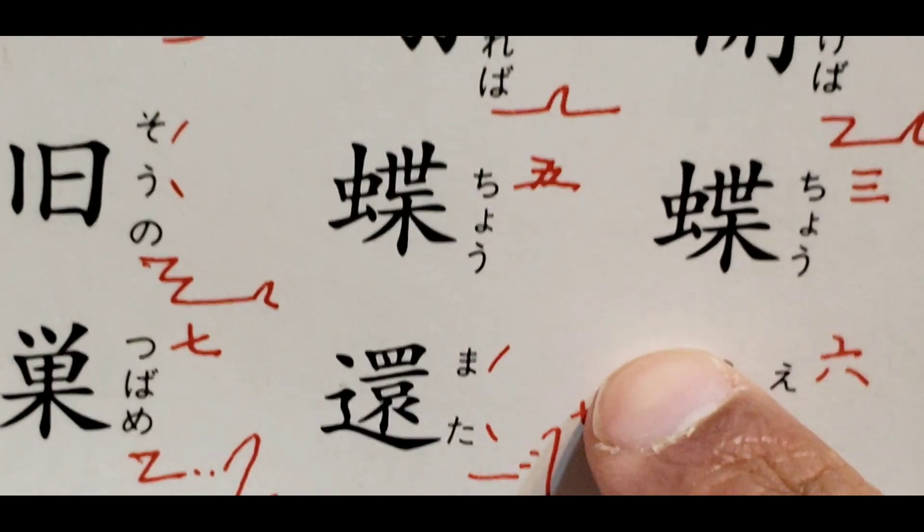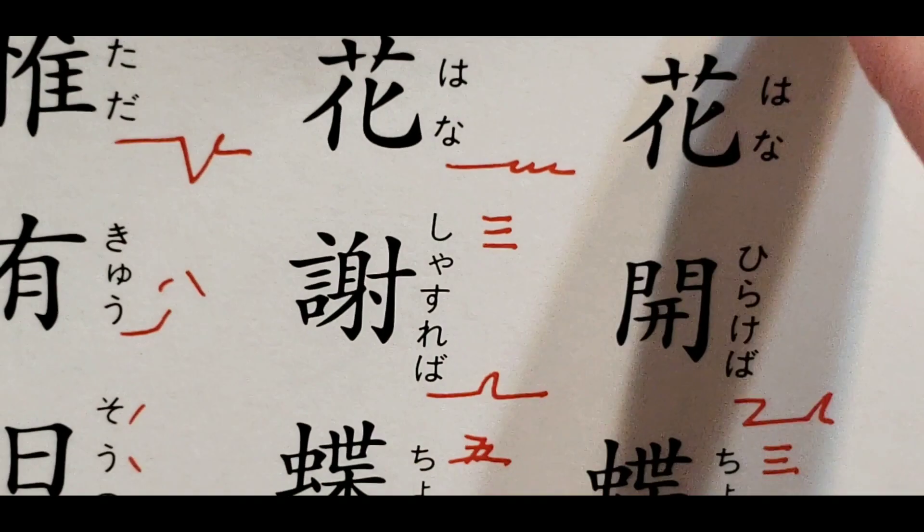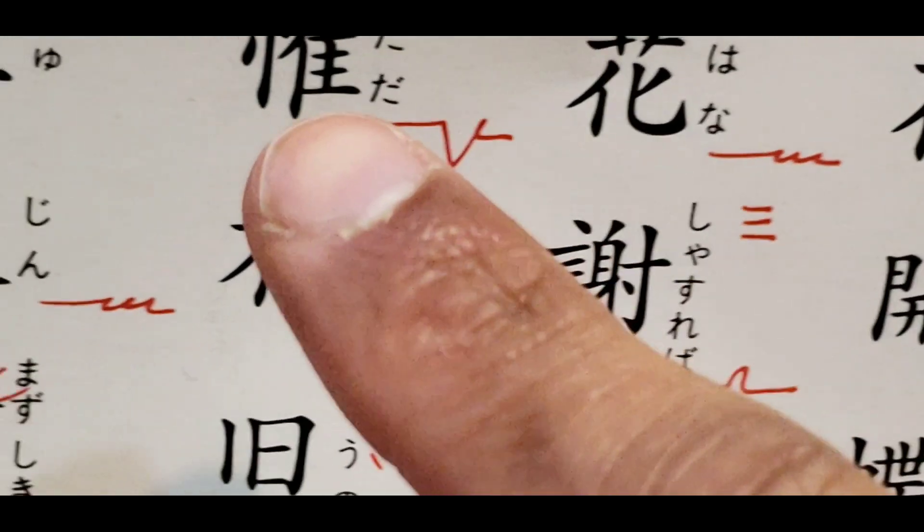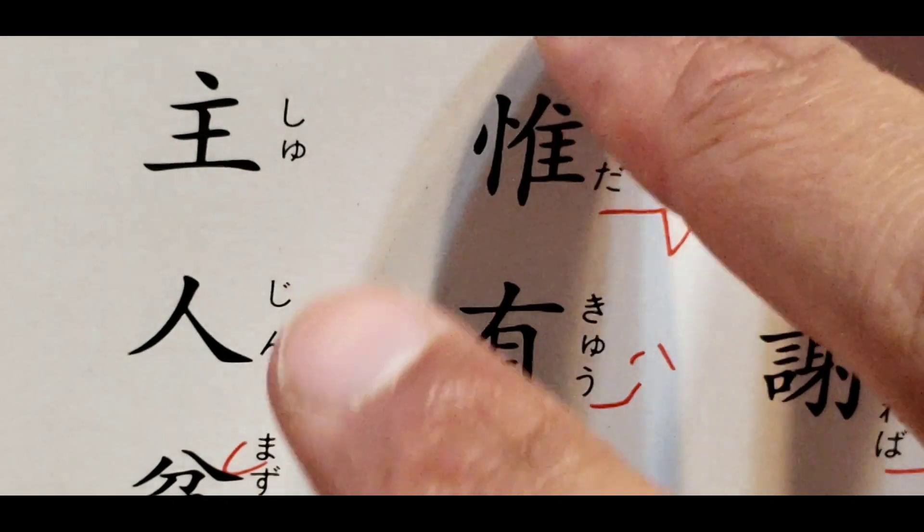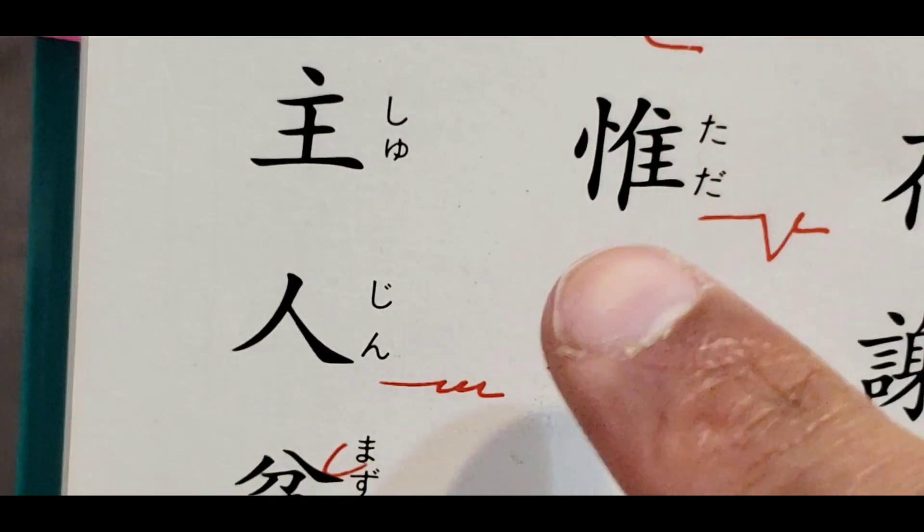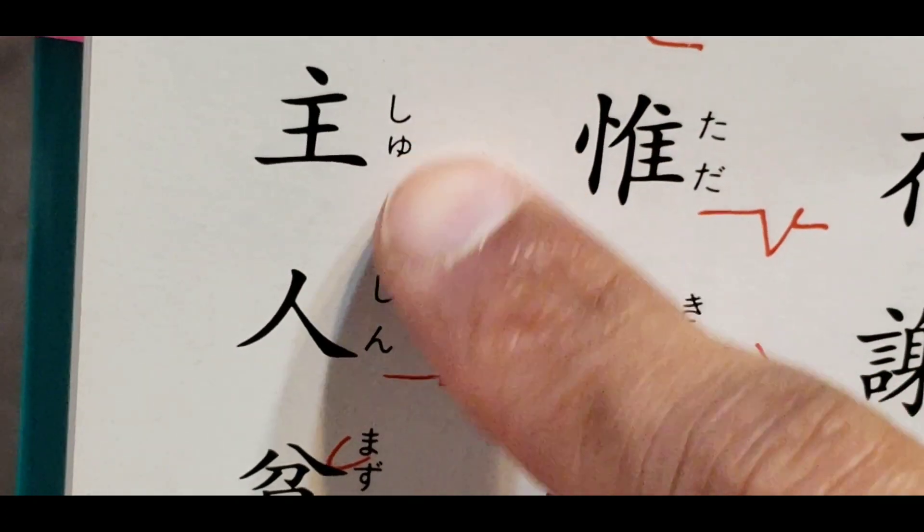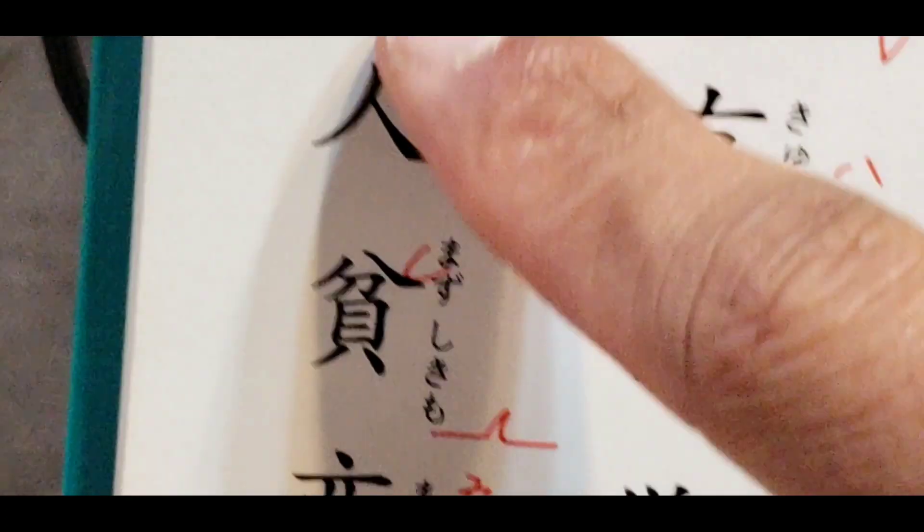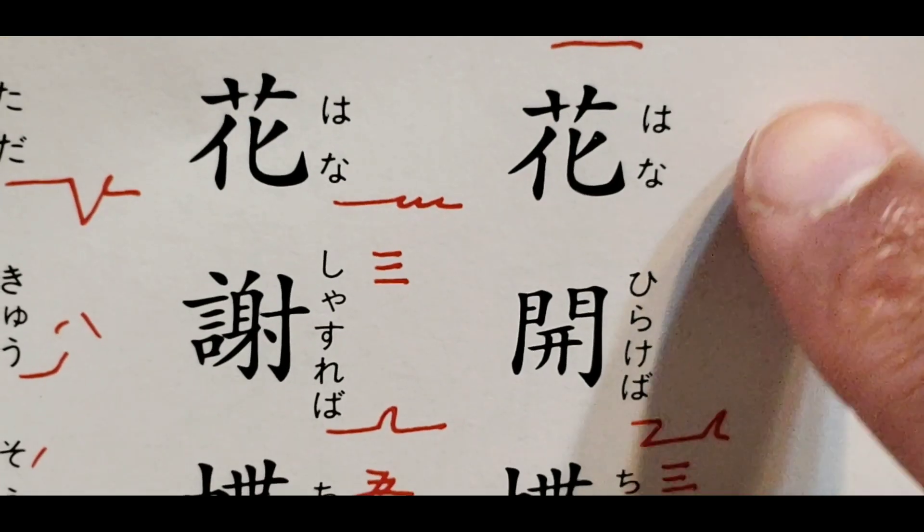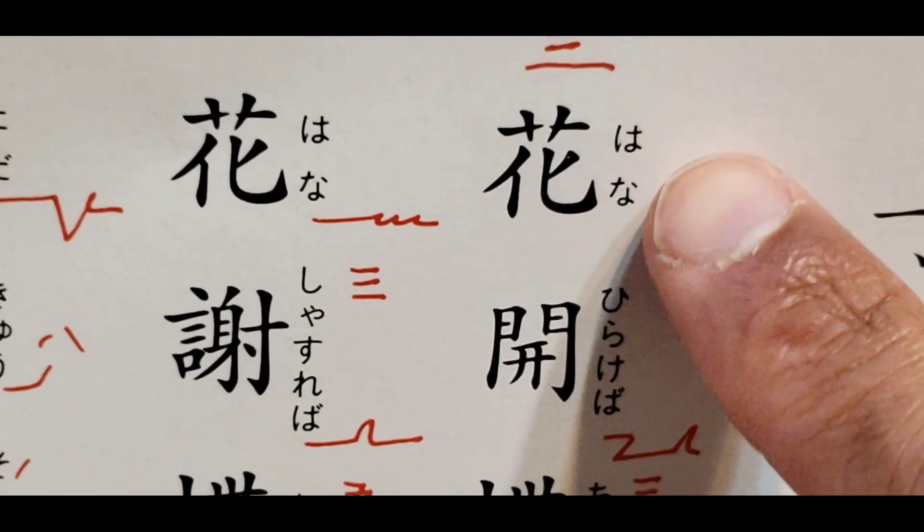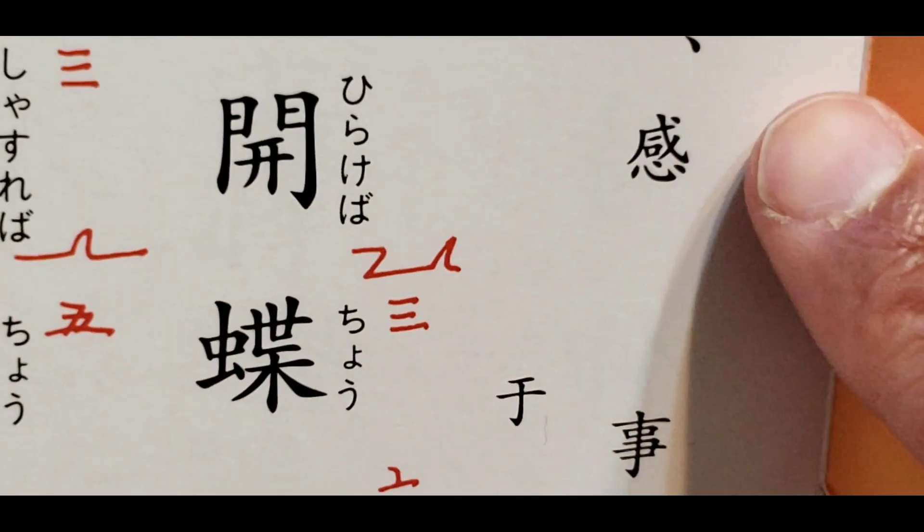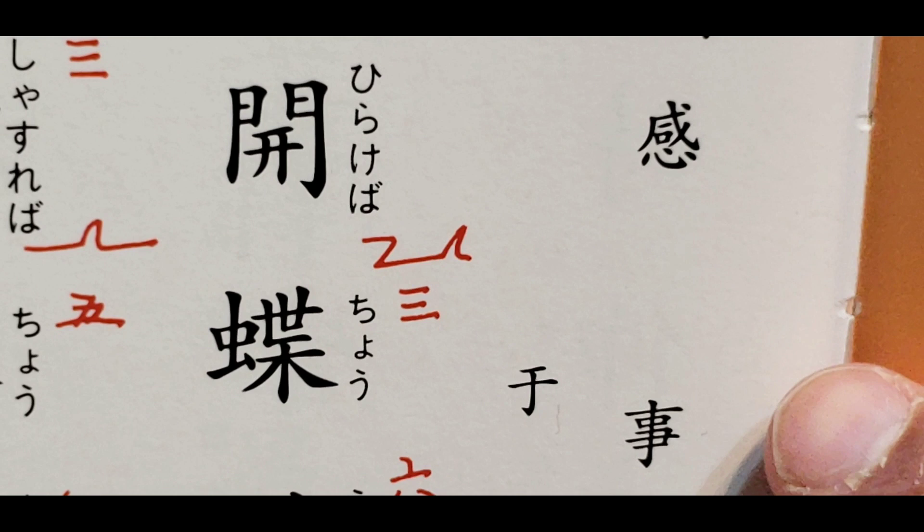Now of course, Japanese uses Chinese characters as well. But when a lot of these poems are written, they were written in Chinese first. Because I think that was one of the big languages, like everybody learned Chinese as kind of like the cultural elite or something like that. I'm not really sure on the history, but back then they would write them in Chinese. So here we have the Chinese poem.